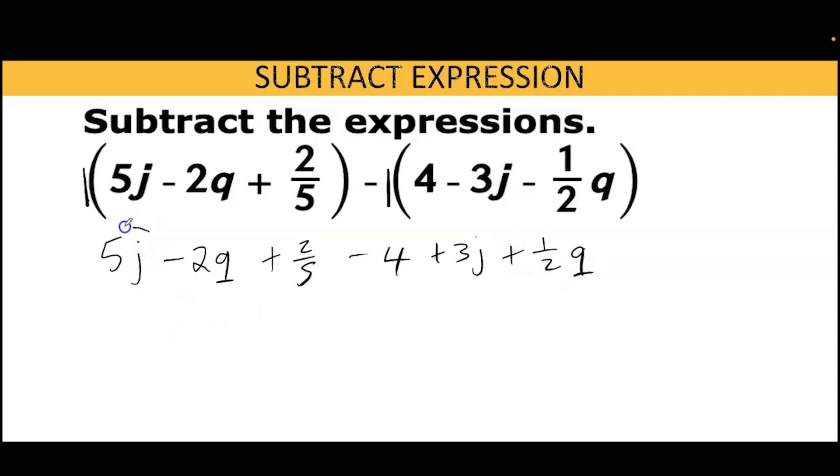From there I can identify my like terms. I'll put a box around all the terms with q - please remember to include the sign that is before it - and I'll put a triangle over my constants.